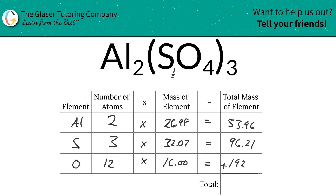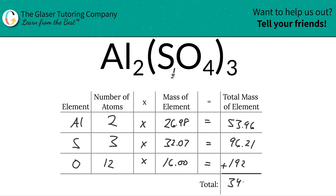Finally, to find the total mass of the compound, all we have to do is add up this column. When we add that together, we get a value of about 342.17. And since we're finding molecular mass, the units are in AMU — atomic mass units.